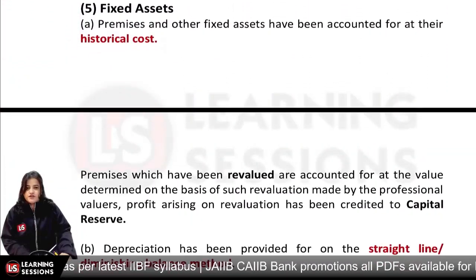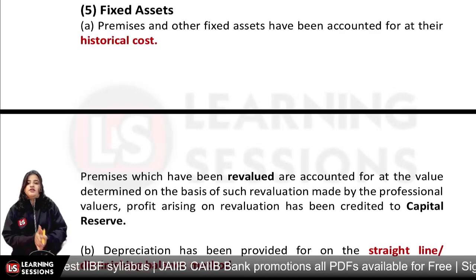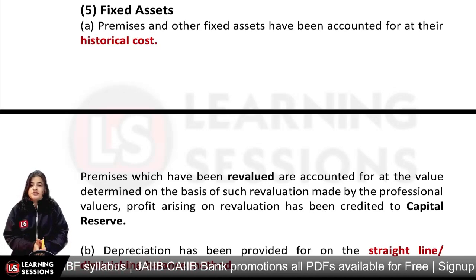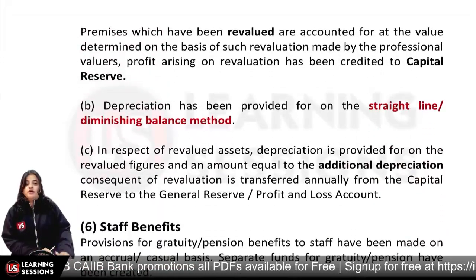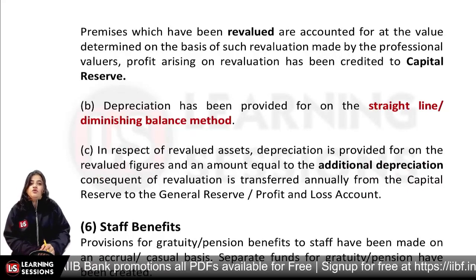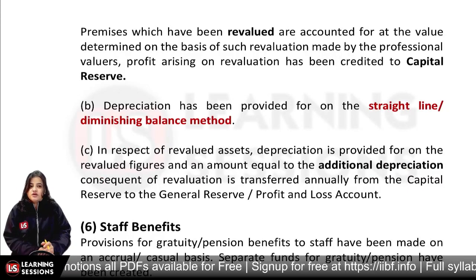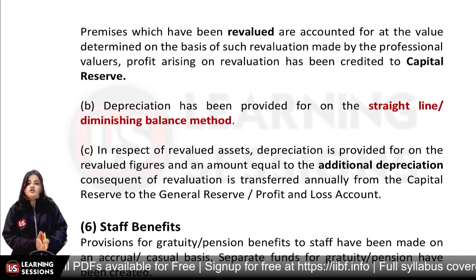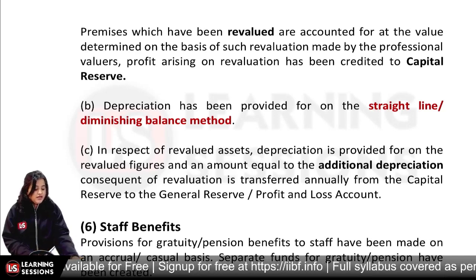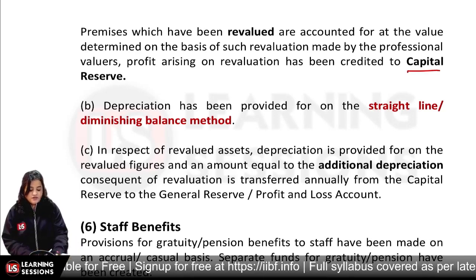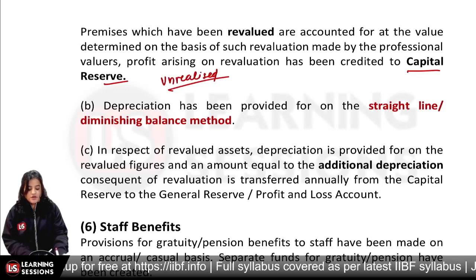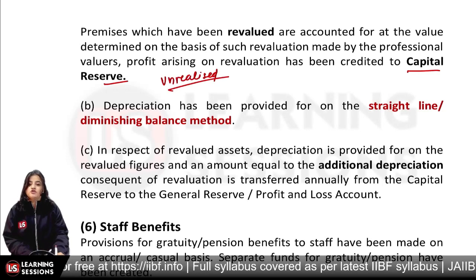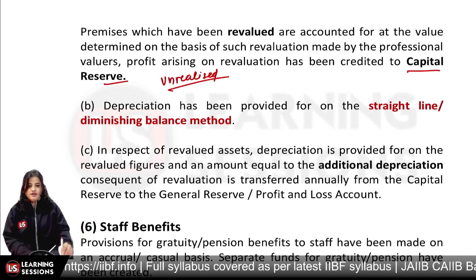Next we have fixed assets. We will tell that we value fixed assets at historical cost. If fixed assets are revalued, the revaluation gain is transferred to the capital reserve because this is an unrealized profit, so we do not make it part of the income statement — we credit the capital reserve.